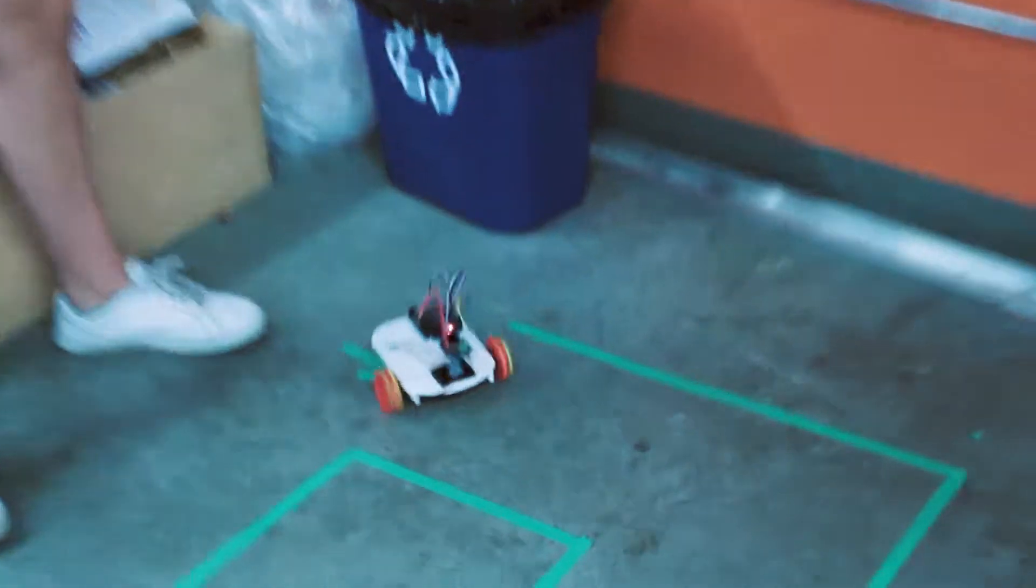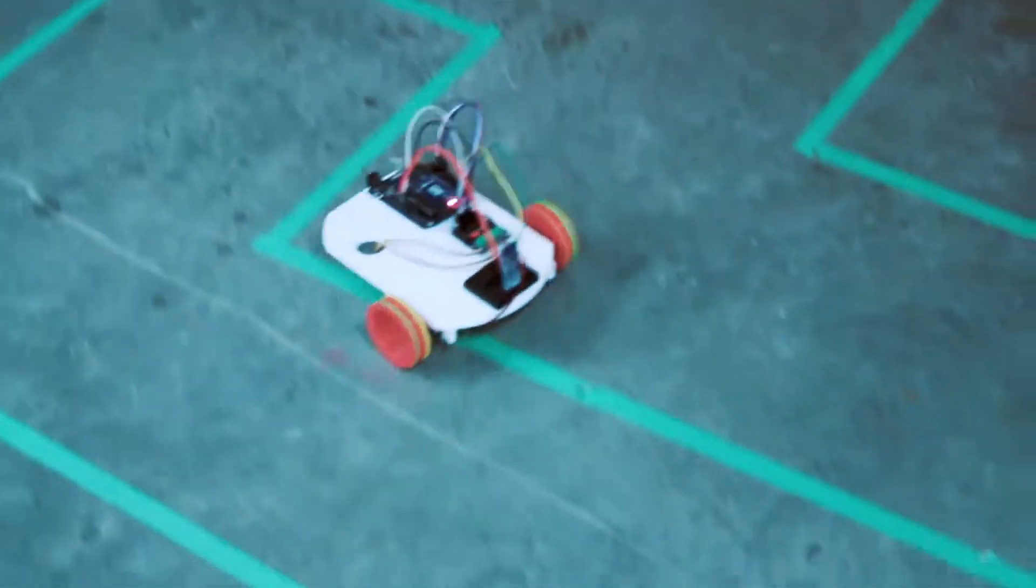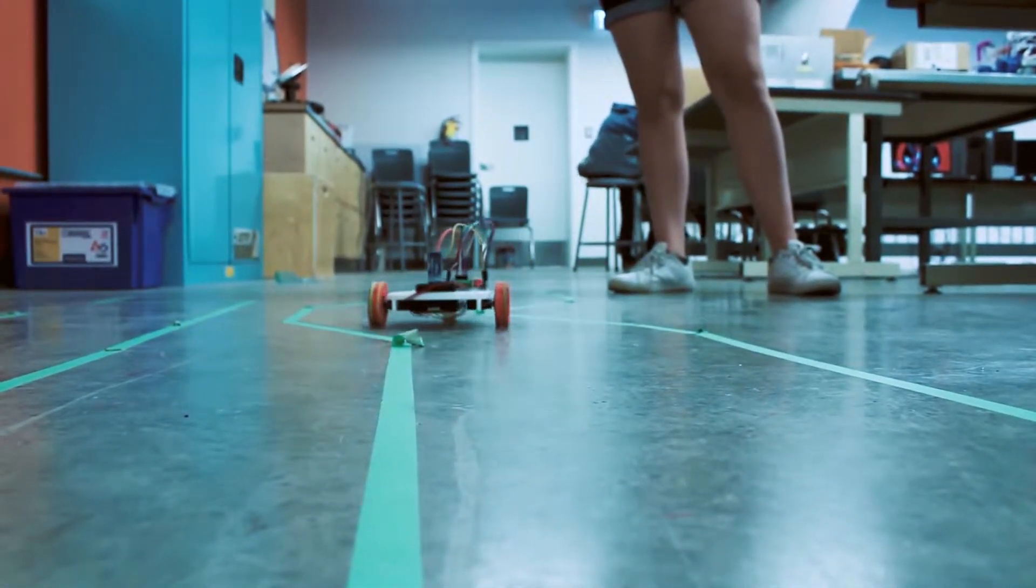Our first code was called Blink. In Blink what we basically did was give the robot commands to move through force. The second project was using Bluetooth and trying to use it on a remote on a smartphone or Android phone and use it like a video game controller to move it.